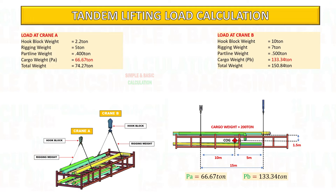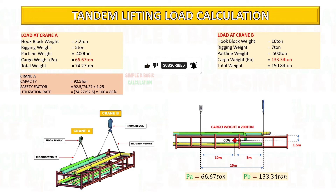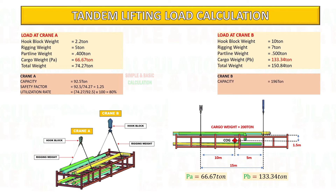Based on crane capacity, calculate the crane safety factor and utilization rate. Divide the crane capacity by total weight to get the safety factor. To get the utilization rate, divide total weight by crane capacity and multiply by 100%.